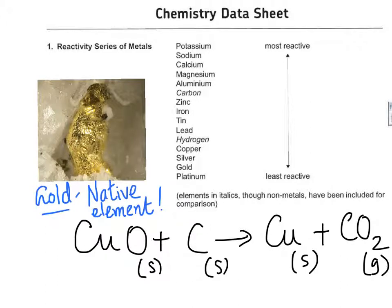Gold is at the very bottom of the reactivity series, making it one of the least reactive elements. It does not react with oxygen or any other element, which is what makes it ideal for jewellery — it does not become dull or discoloured. Because of its very low reactivity, gold is found as it is in nature, and we call it a native element.